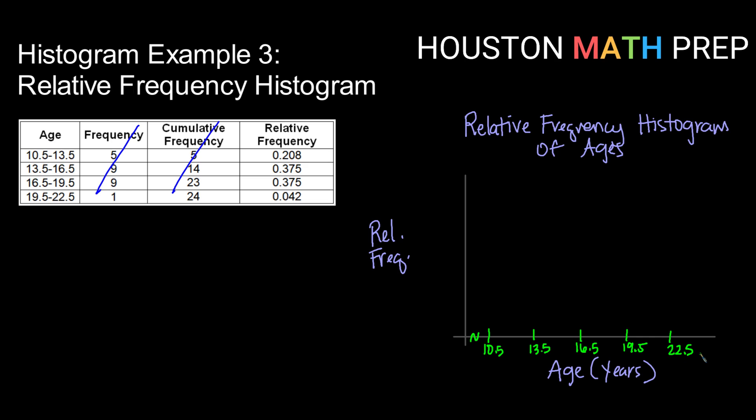Now my vertical axis labels are going to need to allow me to graph these relative frequencies of about 0.208, 0.375, and 0.042. So I notice the largest value I would probably need if I was using something nice and easy might be like 0.4.